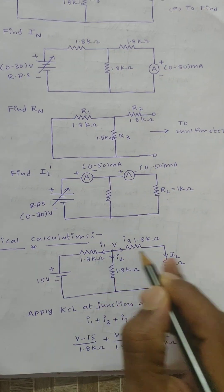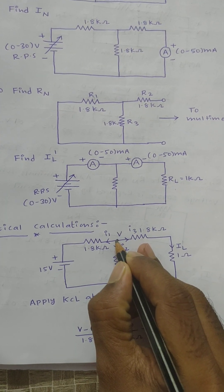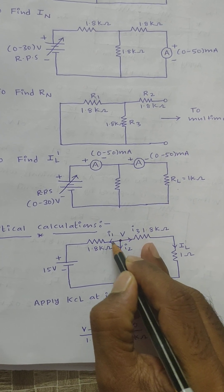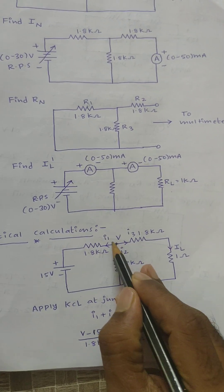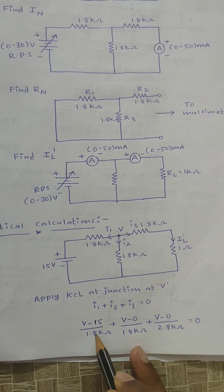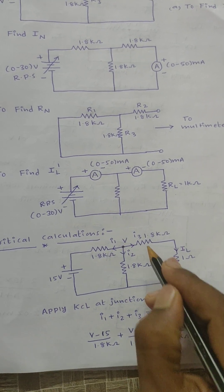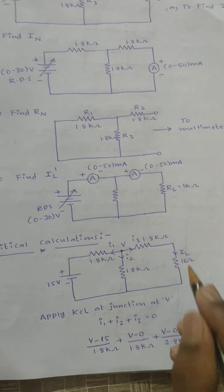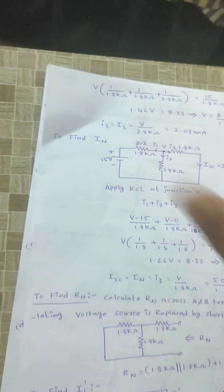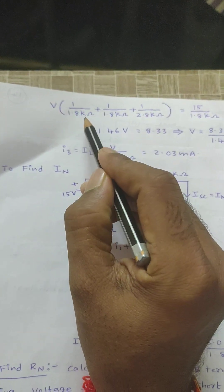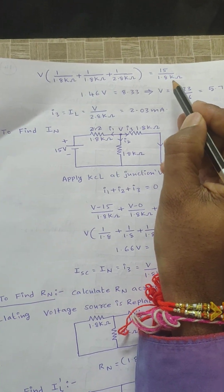First, using the normal method, I am calculating current flowing through the load resistance RL. Step one: identify the number of junctions. At this junction, apply KCL. Here, all are outgoing currents, so I1 + I2 + I3 = 0. I1 = (V − 15) / 1.8 kΩ, I2 = V / 1.8 kΩ, I3 = V / 1.8 kΩ. Taking V as common: 1/1.8 kΩ + 1/1.8 kΩ + 1/2.8 kΩ = 15 / 1.8 kΩ.